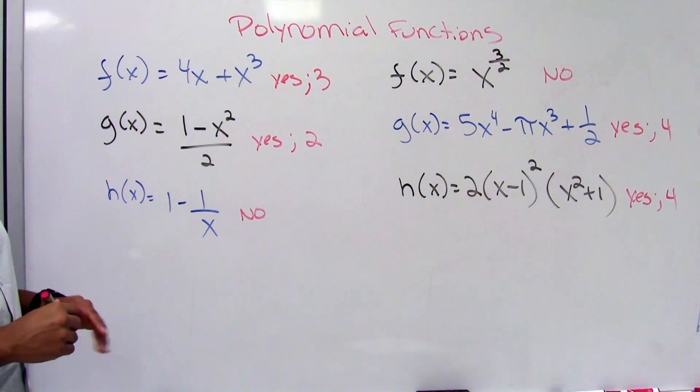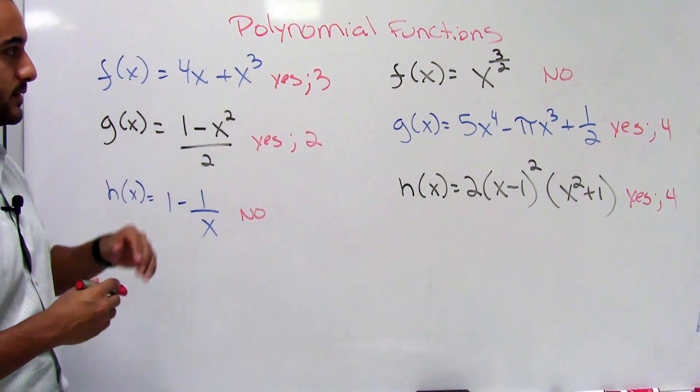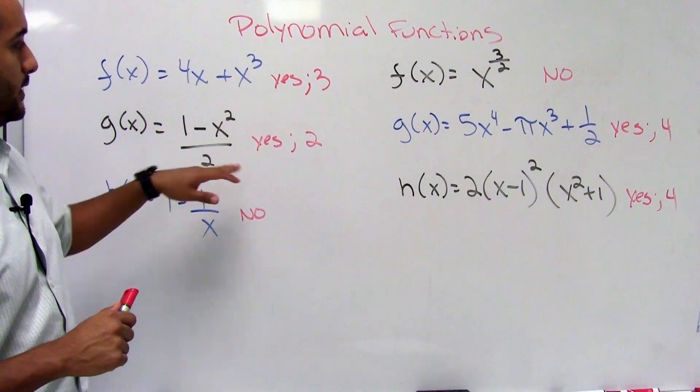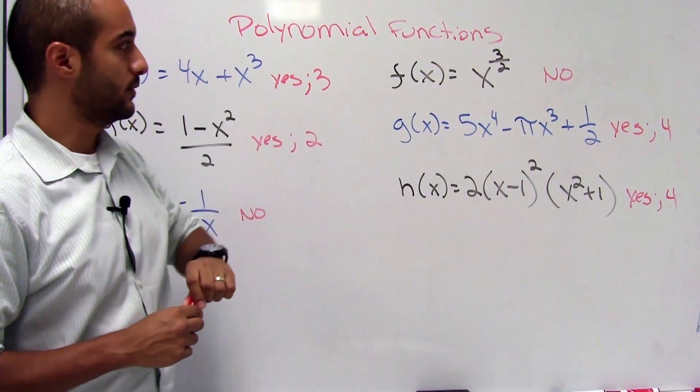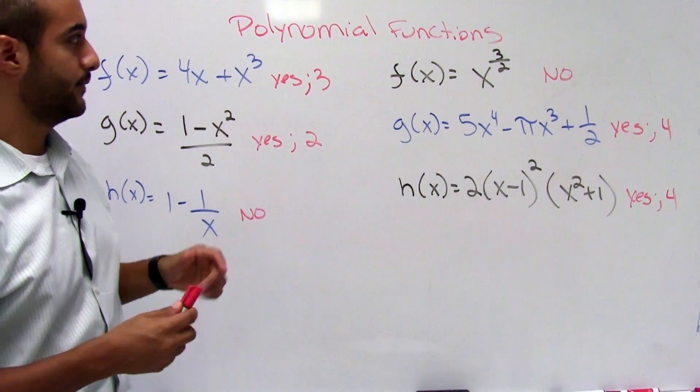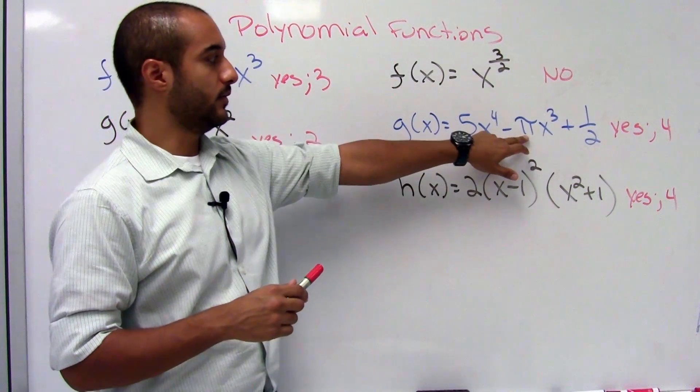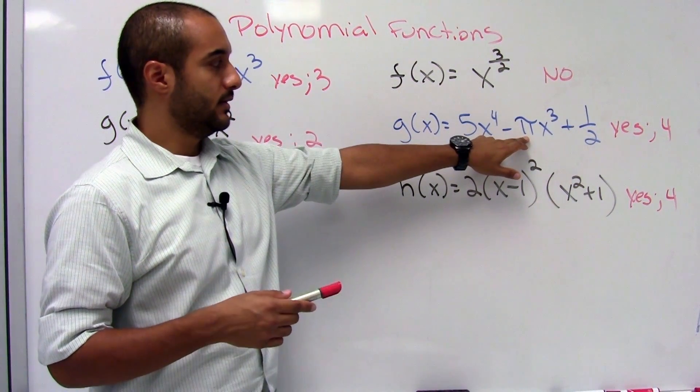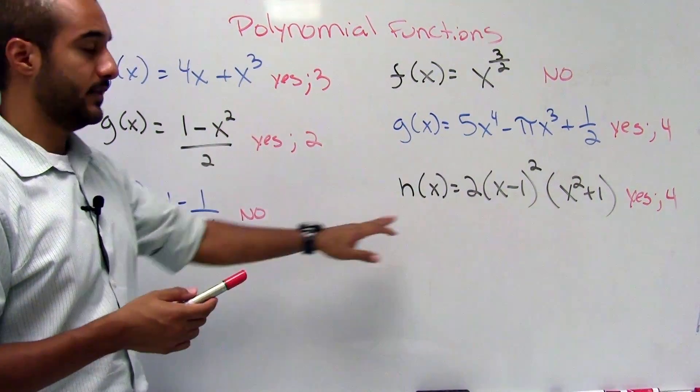Now I would like to do both h's. I think the other ones are kind of self-explanatory. This one is raised to a fraction of a power. We don't do that, or a rational exponent. Now here, even though this is pi, it's just a coefficient, so it's not a big deal.